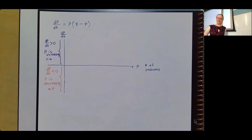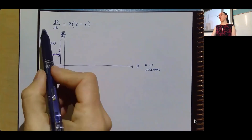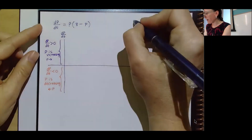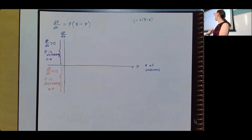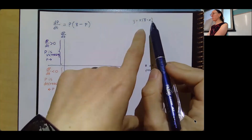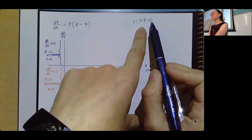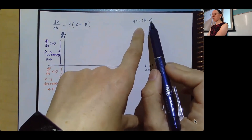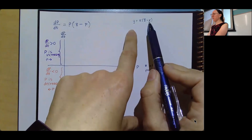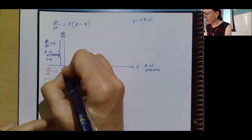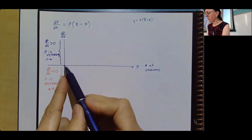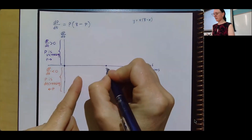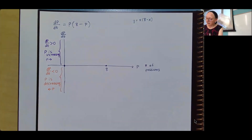Now I'm going to graph this curve. If this were y equals x times (8 minus x), I'm expecting we can look at that and know it's a parabola, know that it's concave down, and find that the intercepts are 0 and 8. So I'm doing that same thing here — I know it's a parabola, I know it's concave down, and I need intercepts at 0 and 8. So it's a concave down parabola.